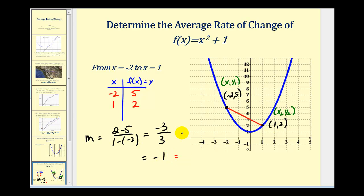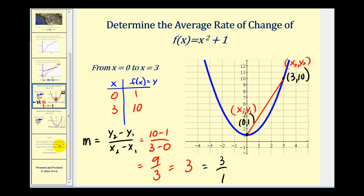So the average rate of change equals negative one. To add some meaning, we can write this as negative one over one — that tells us from x equals negative two to x equals one, as x increases by one, y decreases by one. Even though the fraction form is more meaningful, when giving your answer you always want the simplest form, so the average rate of change is negative one. Similarly, in the previous example it's more meaningful to write three over one, but you should express the average rate of change as positive three.